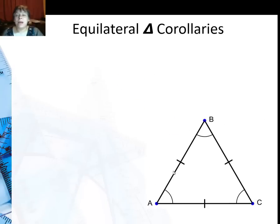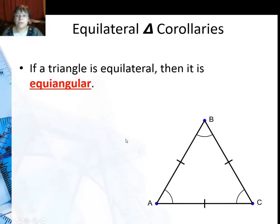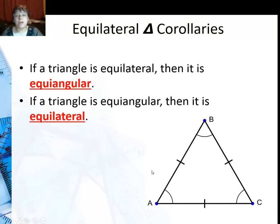Now equilateral triangles also have corollaries, that is if a triangle is equilateral, equal sides. If you speak Spanish, lados iguales, equilateral, do you see the connection in the word there? Then it is equiangular. So if it's equal sides, then the angles are equal. And if a triangle is equiangular, then it is equilateral.